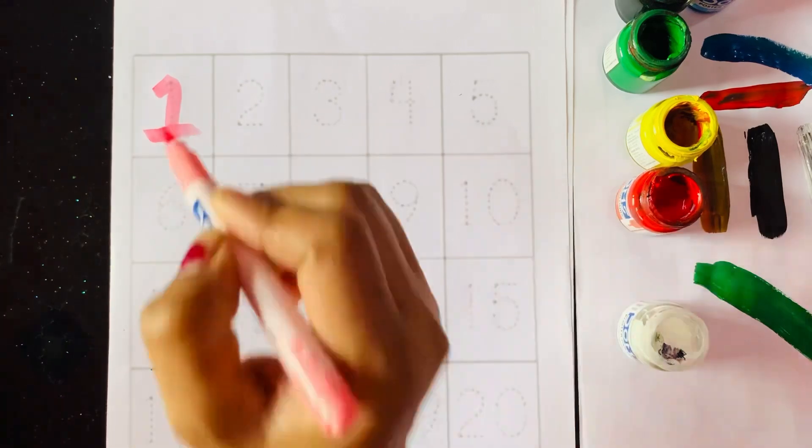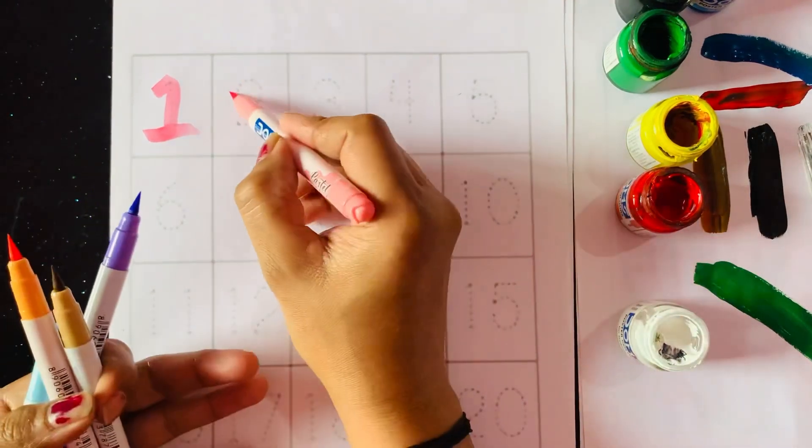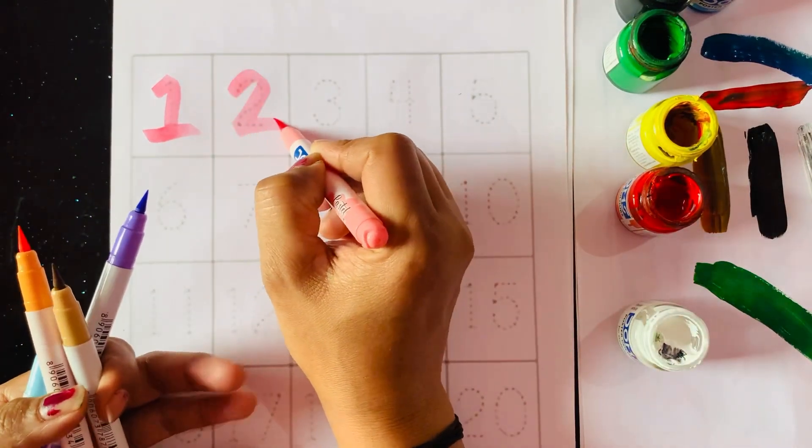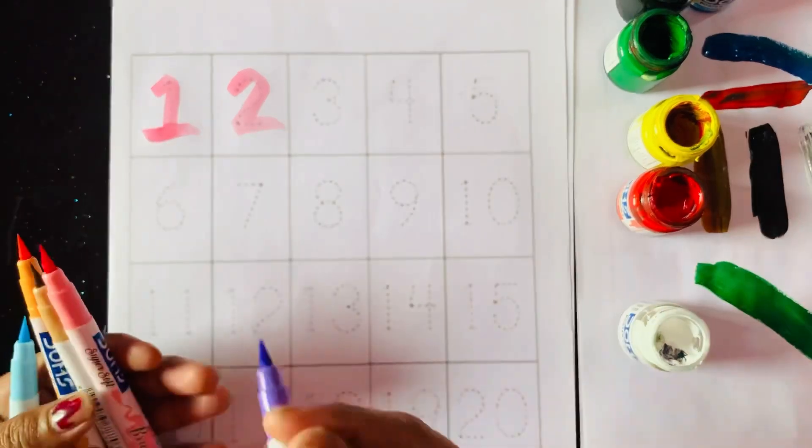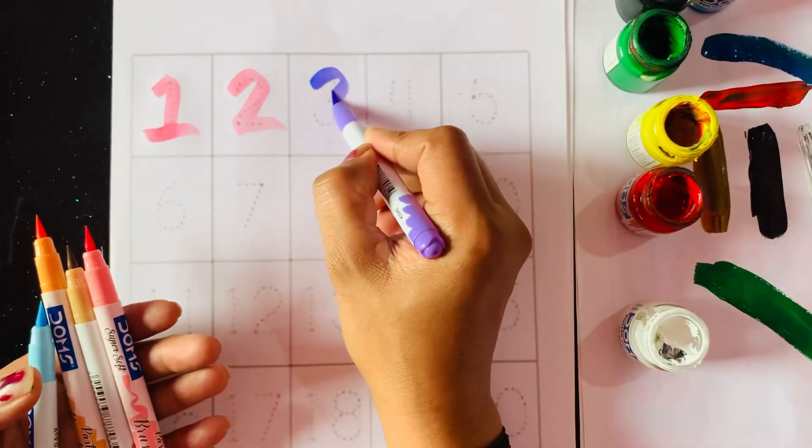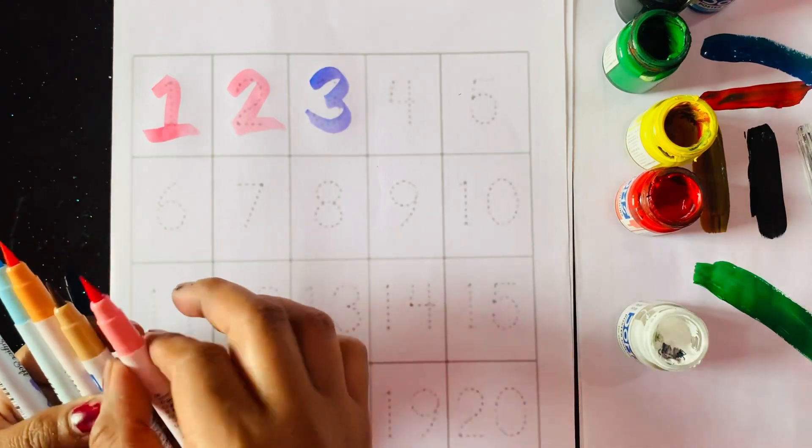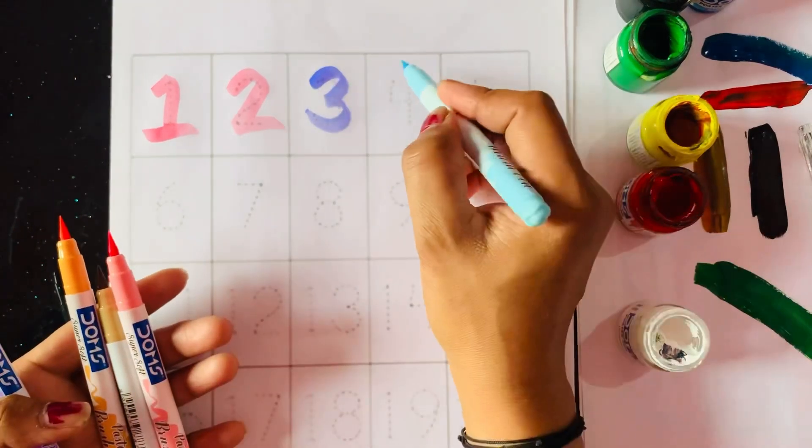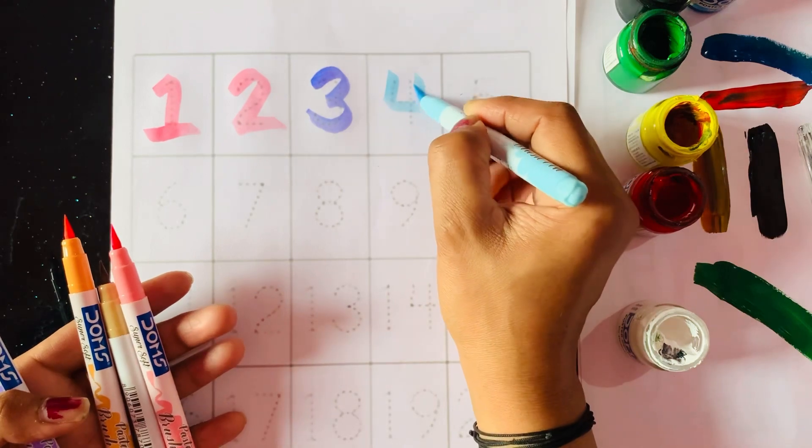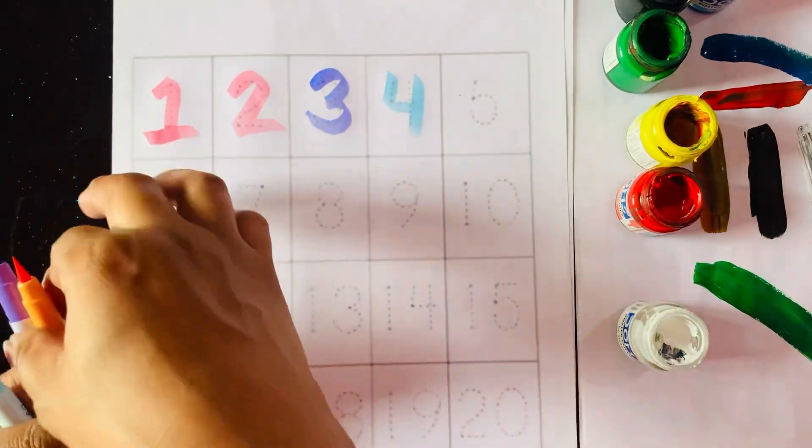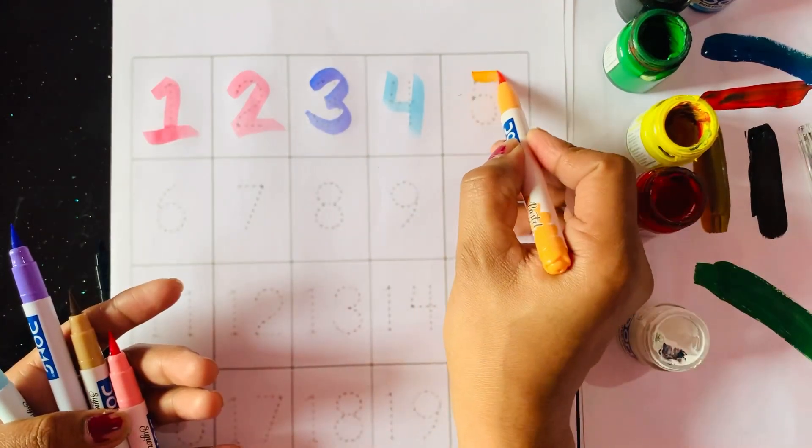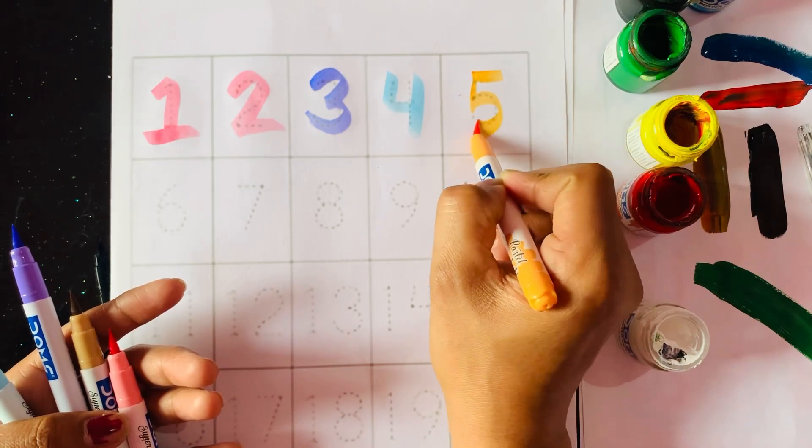One, two, next number is three, and see right here, four, five.